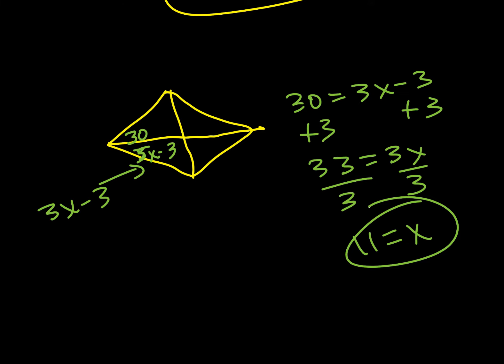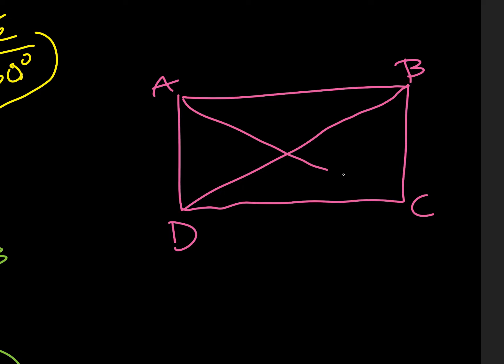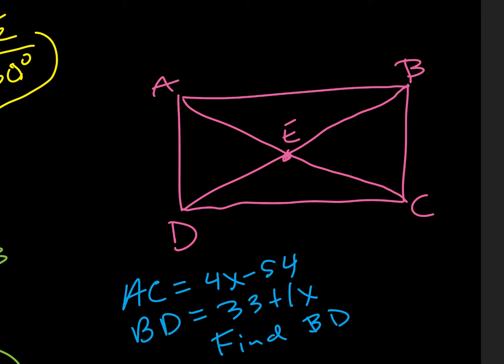And I think that's all we're gonna do on this one. Nope. One more. So, one more problem. This time we have a rectangle. And it's A, B, C, D. Crosses at E. Okay. And we have A, C, is equal to 4x minus 54. And then we have B, D, is equal to 33 plus 1x. And we want to find the value of B, D. So, we want, like, an actual number for B, D.